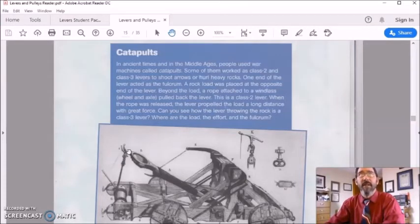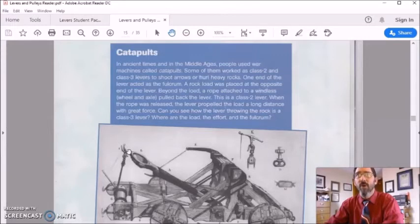Catapults. In ancient times and in the Middle Ages people used war machines called catapults. Some of them worked as class two and class three levers to shoot arrows and hurl heavy rocks. One end of the lever acted as the fulcrum. A rock load was placed at the opposite end of the lever. Beyond the load a rope was attached to a windlass or a type of wheel and axle. It pulled back the lever.